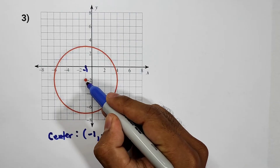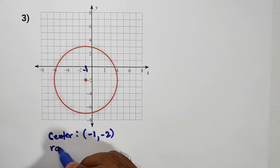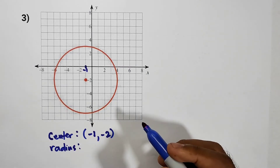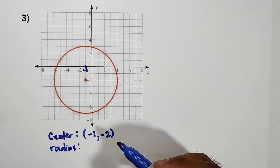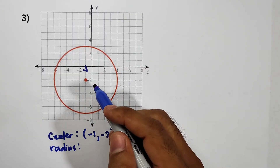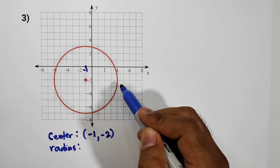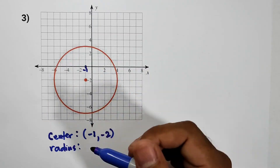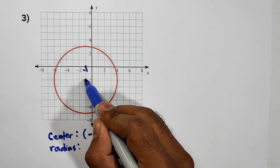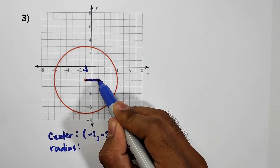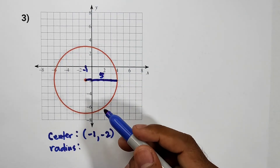Next, what is the radius? The radius of this graph — let us count the radius: 1 unit to the right or to the left, upward or downward, since the radius has the same measure. Counting: 1, 2, 3, 4, 5 — so the radius is 5 units.